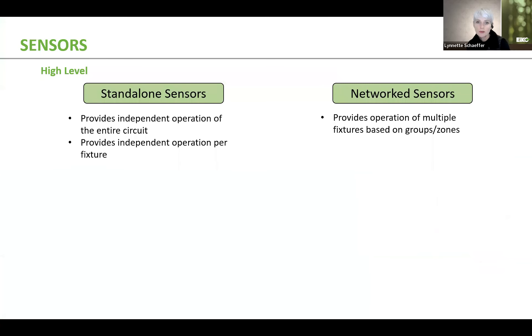From a high-level perspective, there are standalone sensors and there are networked sensors. Standalone sensors, in many cases, provide independent operation of the entire circuit. However, they can also be installed on fixtures individually. The issue with this is you can probably imagine you kind of get this popcorn effect since each fixture will turn on and off as it senses motion, which can be slightly annoying and not to mention very expensive as well.